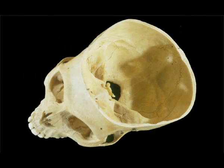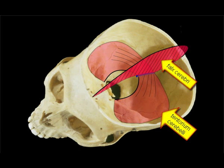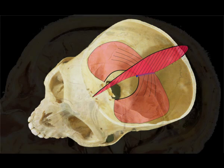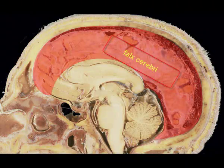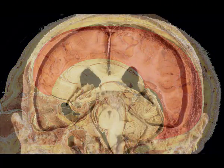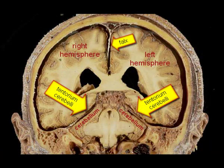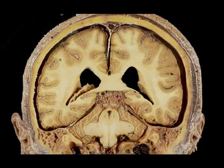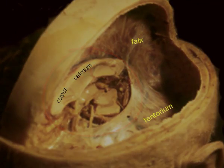The dura is attached to the inside of the skull, but at some points folds arise that divide the skull into three big compartments. The falx is a longitudinal dural fold that separates both cerebral hemispheres. A second fold, the tentorium, separates the cerebellum from the cerebral hemispheres. As a result, only a small opening exists through which the cerebral hemispheres connect to the brainstem and to each other via the corpus callosum.